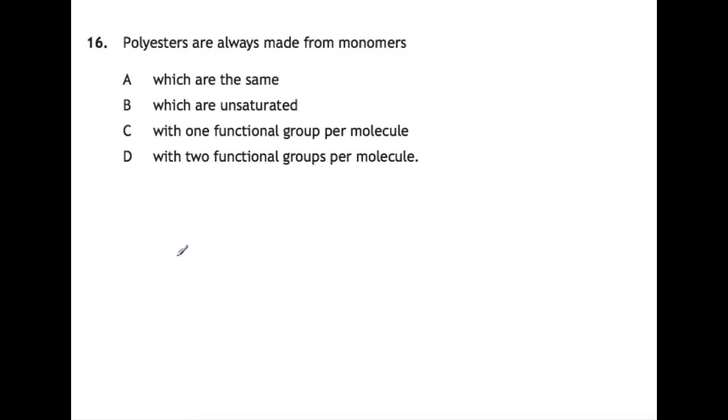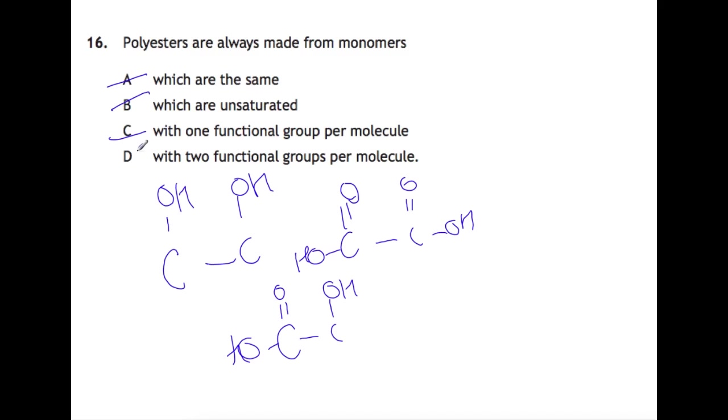Question 16. We're looking at polyesters. Polyesters are a condensation polymer and there's different ways that you can make them. You can use monomers where you have two OH groups, so that's a diol, and then a dicarboxylic acid as well. Or you could use something which had both functional groups on it. So the monomers themselves don't have to be the same. They can be different. They can be unsaturated but they're often not. They must have two functional groups per monomer because we need to have this di-functional group where this can join and then this other functional group can join to the next one. So the answer is D.